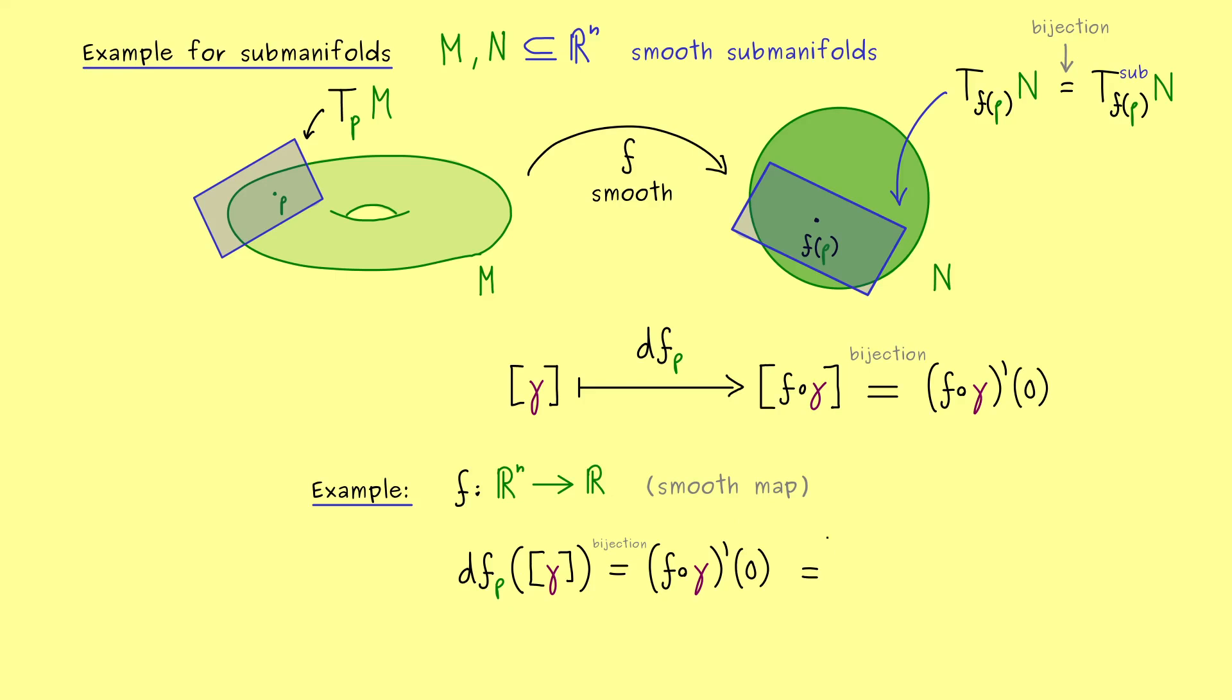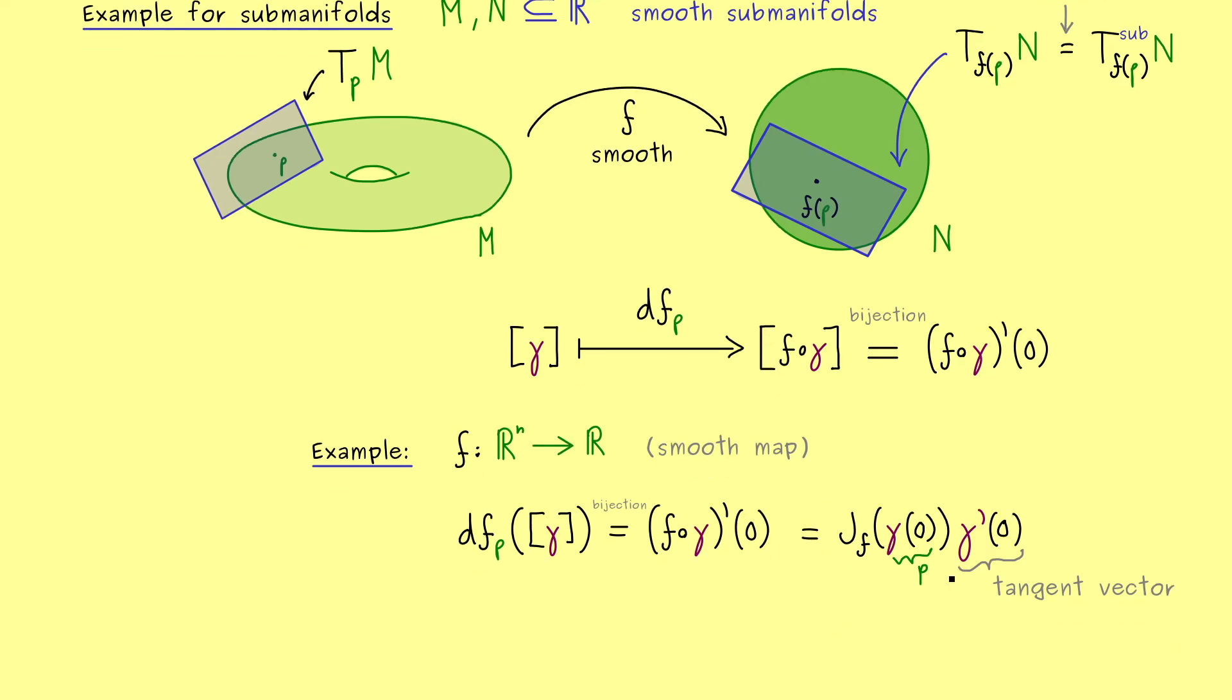This means we have the ordinary derivative of f which can be expressed by the Jacobian matrix. The point we have to put in is γ(0) which is as we know just p. In other words here we just have the Jacobian at the point p. Then by the chain rule here we have a matrix multiplication with the derivative of γ at 0. However there we know this just represents the tangent vector we have put in. Hence what we recognize here is that this is nothing more than the directional derivative of f along this tangent vector.